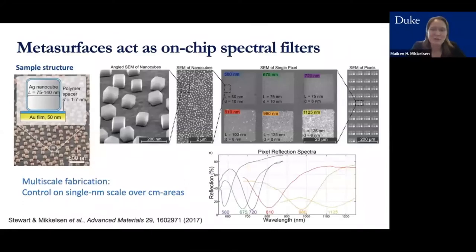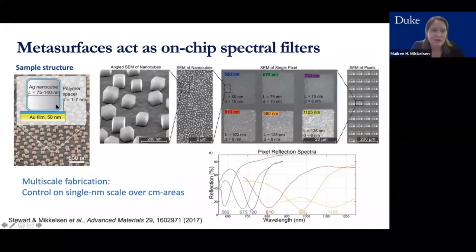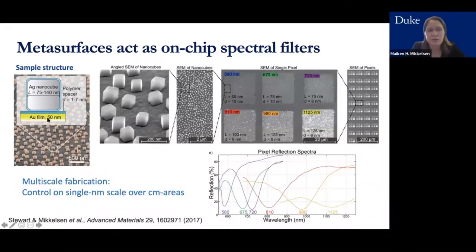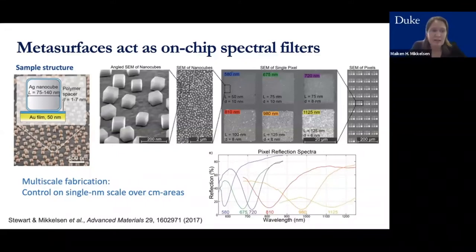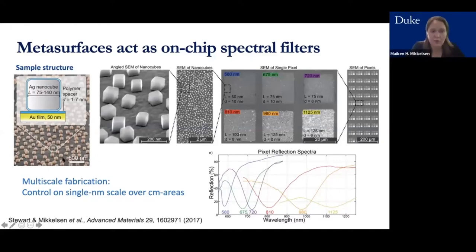The metasurfaces we use extensively in my group are nanogap plasmonic structures — also called nanoparticle-on-mirror or nanopatch antennas. These consist of a gold film around 50 nanometers thick, a polymer dielectric spacer layer of about 1 to 10 nanometers, and then nanoparticles — colloidal nanocubes or EBL-fabricated nanoparticles — deposited on top. This structure covers large surfaces and acts as a perfect absorber at a particular wavelength at the plasmon resonance.